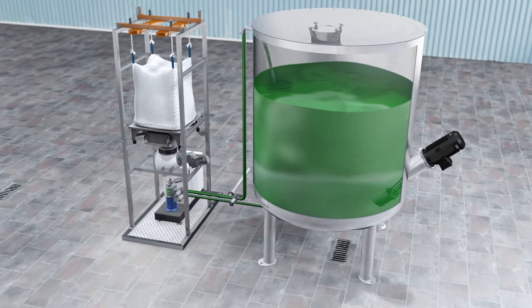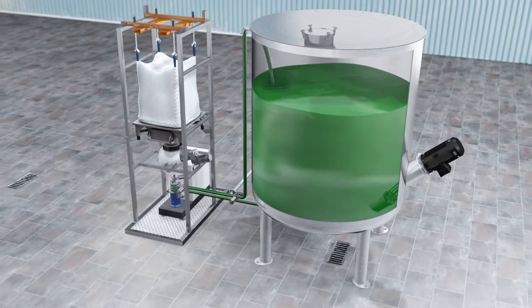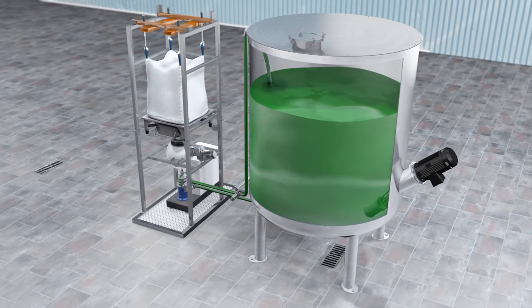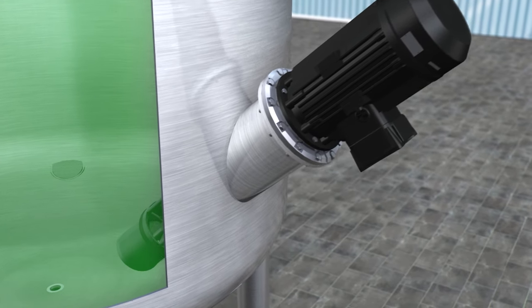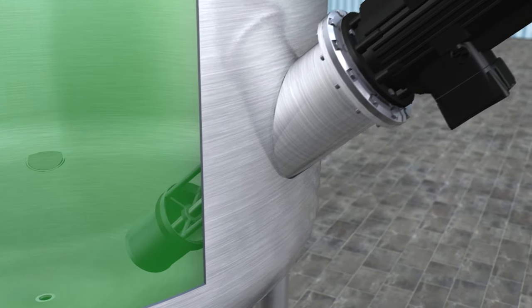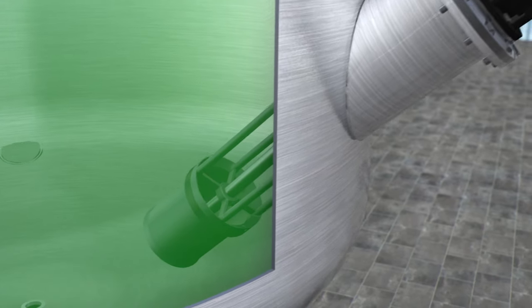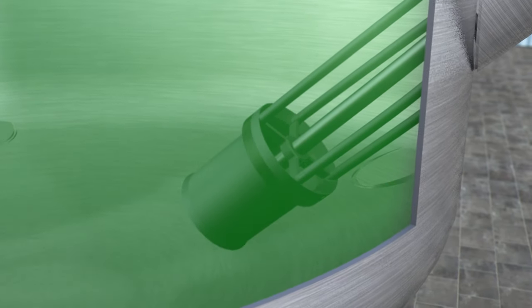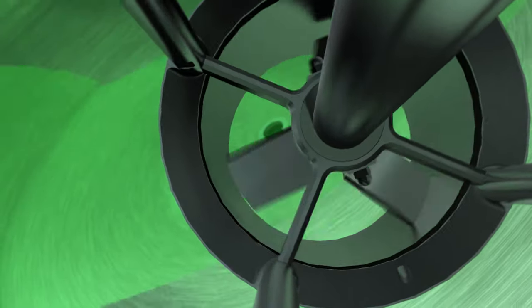Once all the solids have been added, the product will recirculate until the solids are evenly distributed. For large batches of viscous products, it is recommended to use an effective overhead stirrer. This ensures the quick homogenization of the vessel contents.